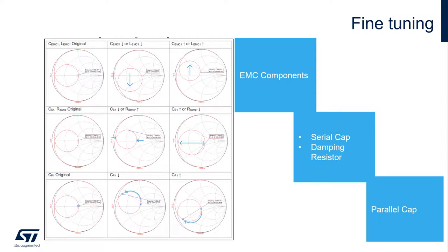Here we can see a cheat sheet of sorts that shows how each of the component values affects the S11. While I gave a brief description of what each component controls, in reality, changing one component will necessitate adjusting the other values as well, since all of them work as a whole. For example, if one wanted to increase the impedance match, you would generally increase the serial capacitance. But additionally, you would probably also have to increase the parallel capacitance to put the resonant frequency back on the real axis. This is the type of skill that comes with time, but the resulting S11 after adjusting the serial capacitance would show you that you need to increase the parallel capacitance.